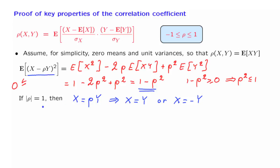So we see that if the correlation coefficient has an absolute value of 1, then x and y are related to each other according to a simple linear relation. And it's an extreme form of dependence between the two random variables.